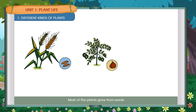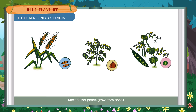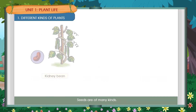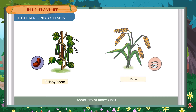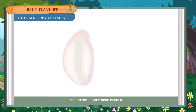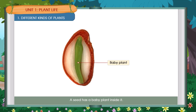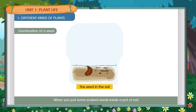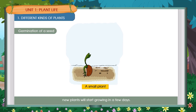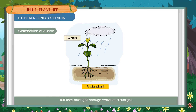Seeds are of many kinds. Wheat, Gram, Pea, Kidney Bean, Rice. A seed has a baby plant inside it. When you put some soaked seeds into a pot of soil, new plants will start growing in a few days. But they must get enough water and sunlight.